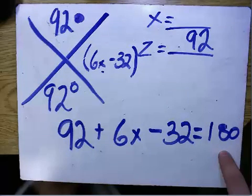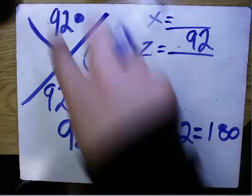The 180 comes from this line over here, because they're supplementary angles and they have to equal 180.